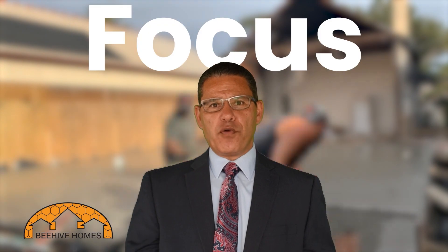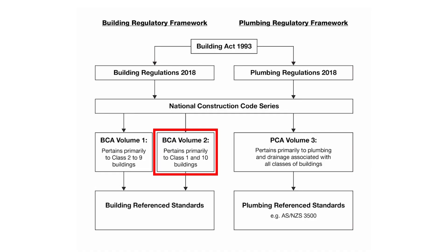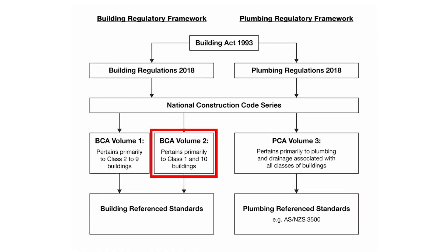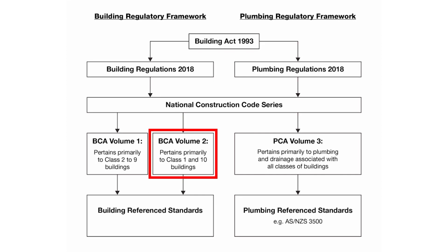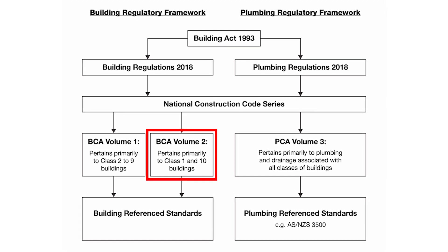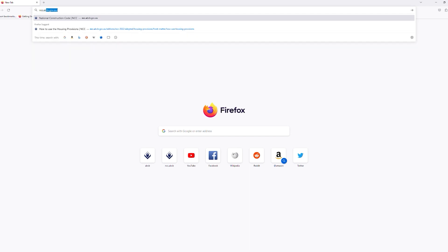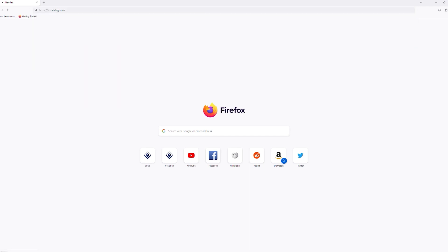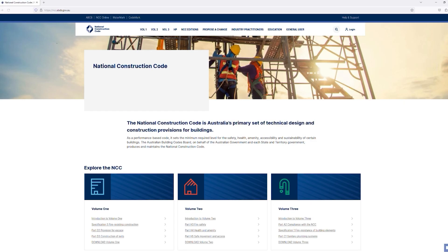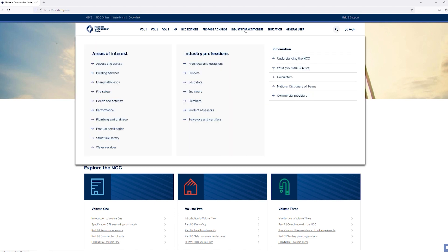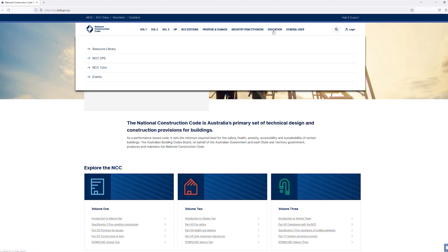Welcome to the very first episode of Focus. Today we're going to talk about the rules of the game — the building code. If we are specifically talking about Class 1 construction of houses, this converts into the NCC Volume 2, and the acceptable construction methodology is listed in the housing provisions.